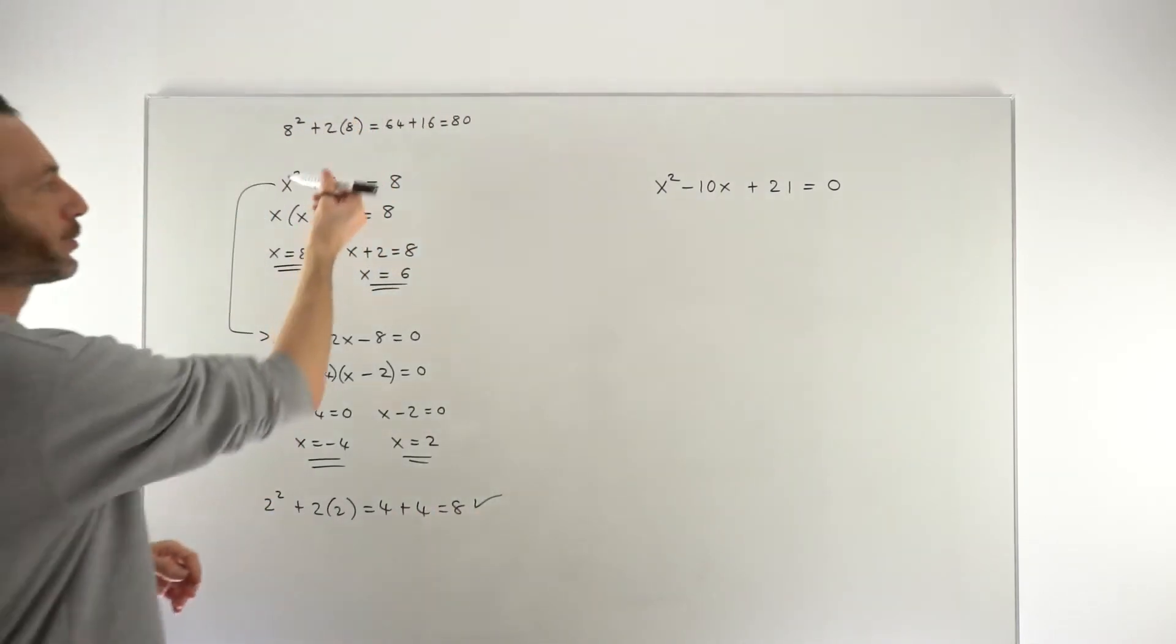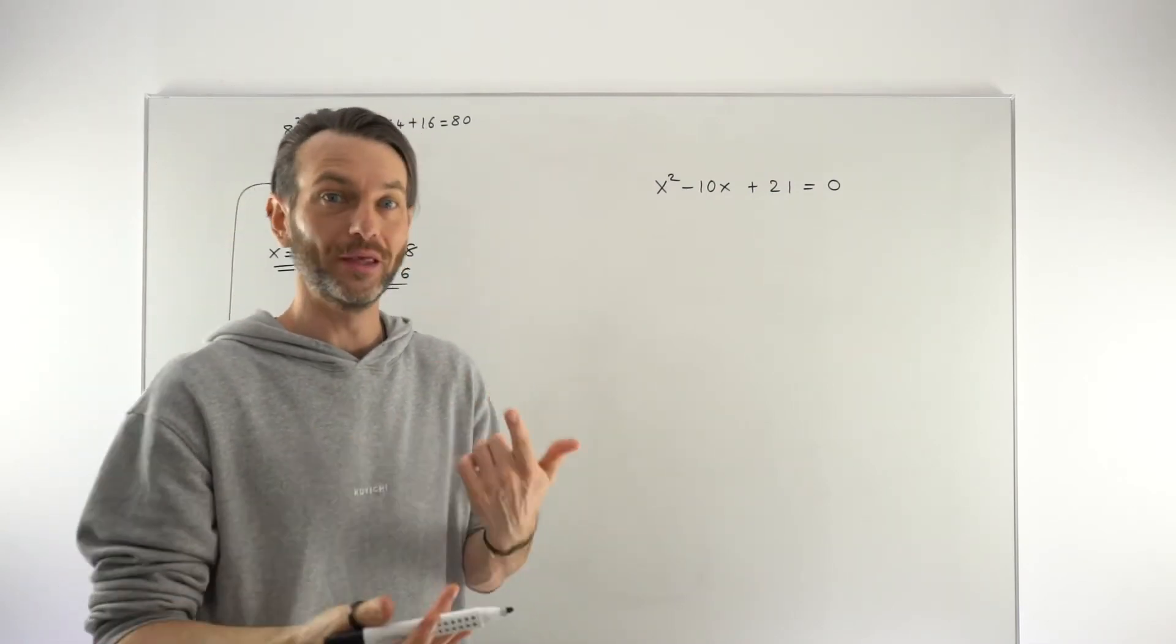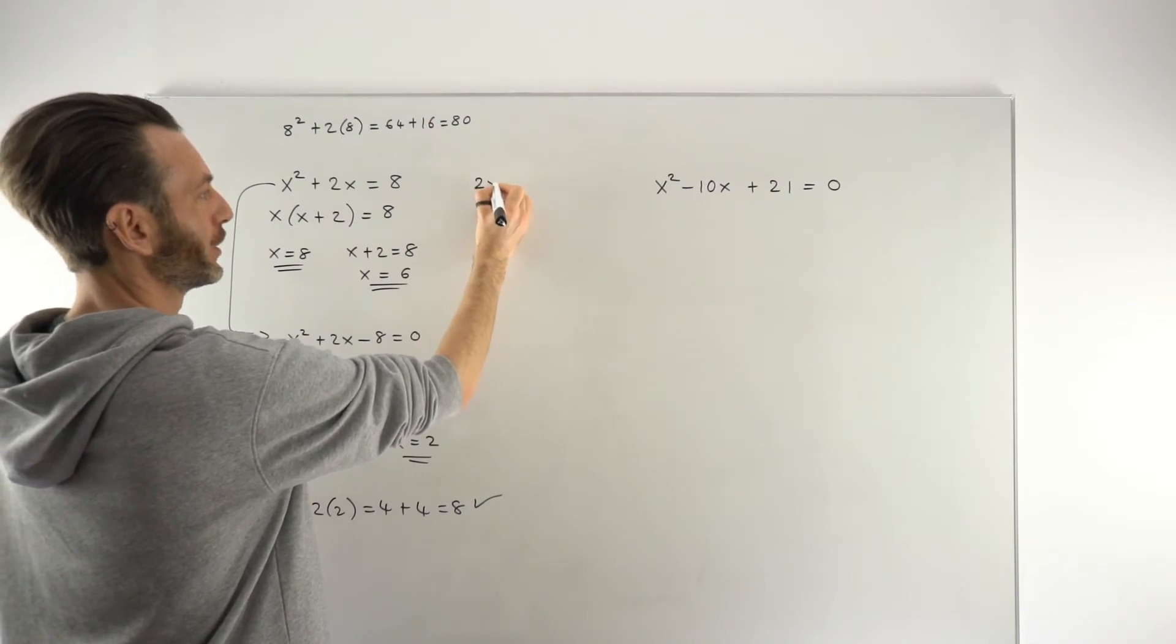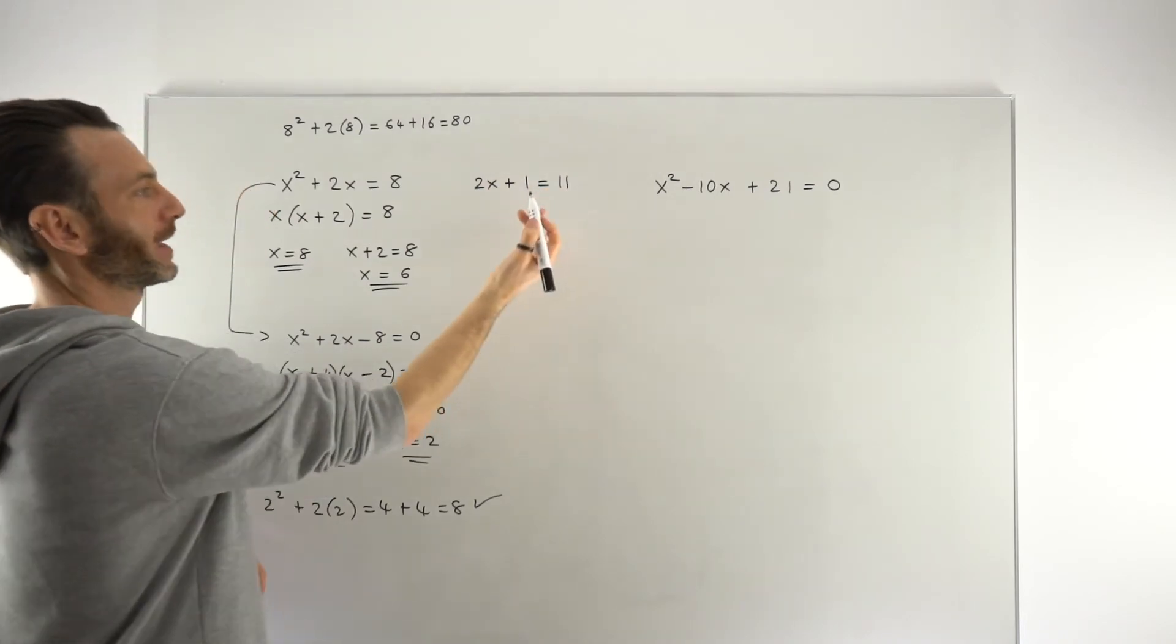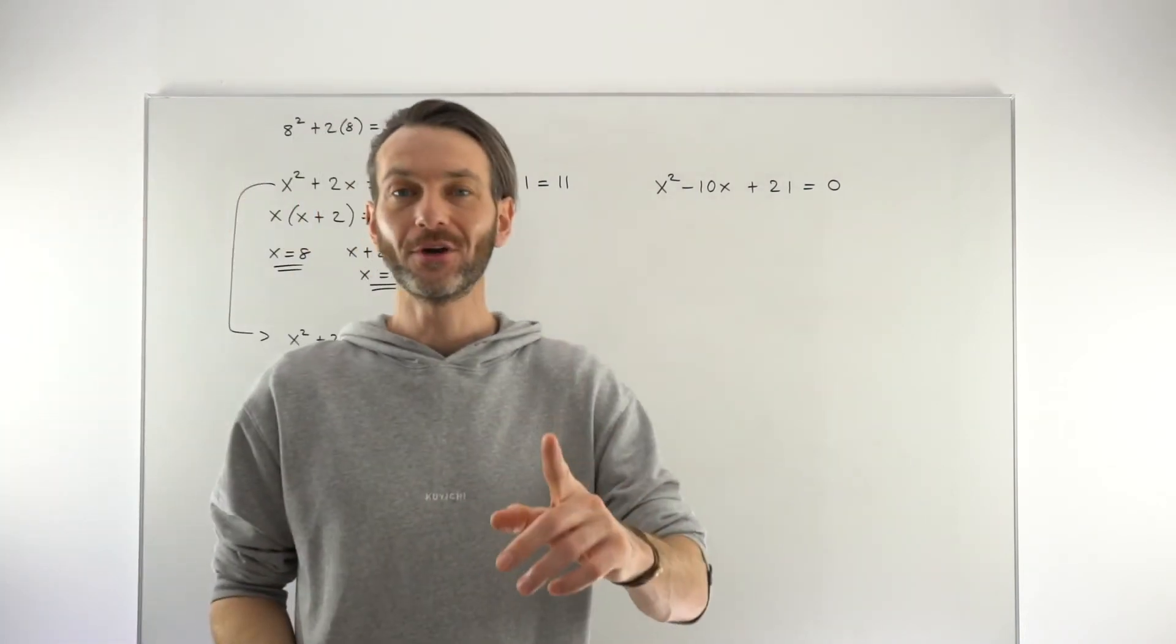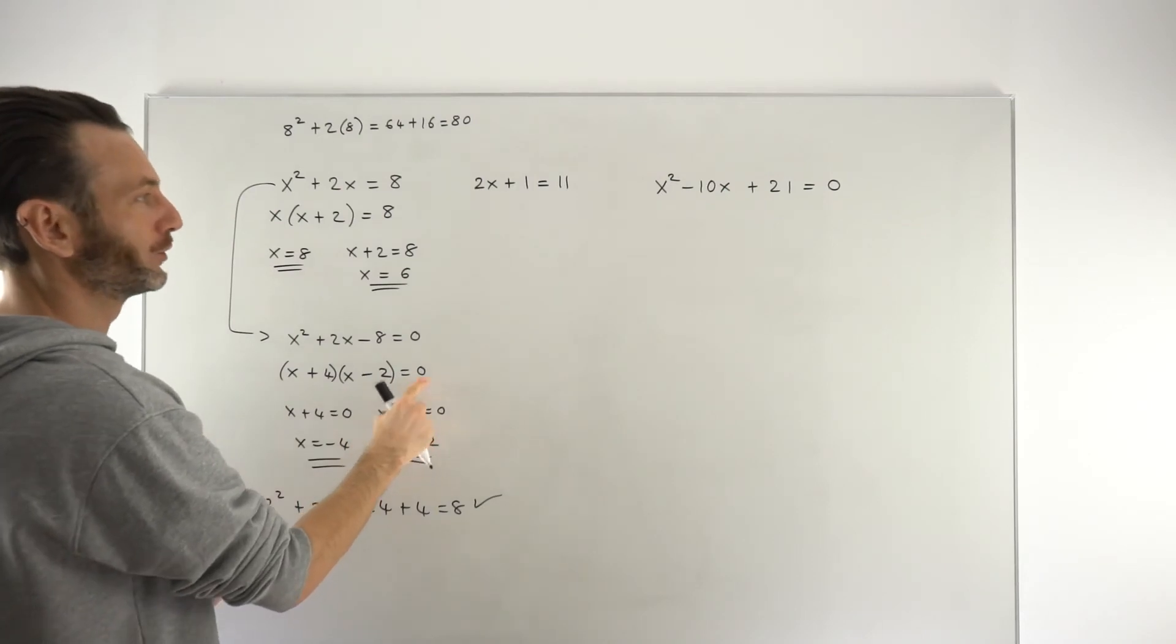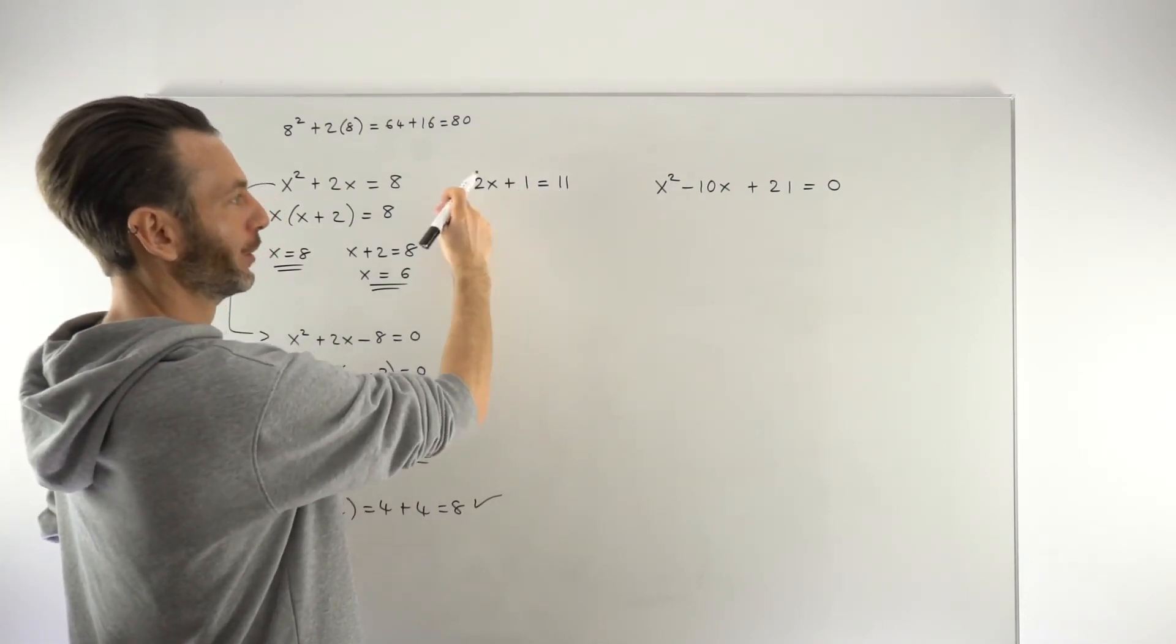It's because these are quadratic equations but the other type of equation which is commonly solved is a linear equation. So something like this, if you've got the equation 2x plus 1 equals 11, that's a different type of equation altogether, that's a linear equation. It's just got an x to the power of 1 term. When you solve linear equations though we don't use this technique, there's no factorizing, there's no equal to 0.